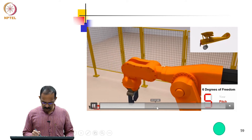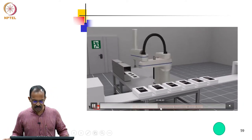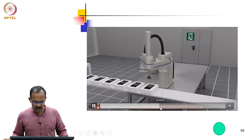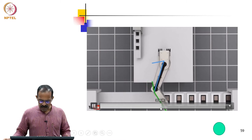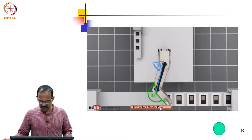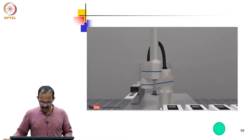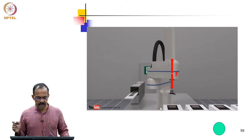The second one is the SCARA configuration, where you can see there are two R joints and one P joint. The last joint is a prismatic joint and the two rotary joints have all their joint axes in the vertical direction. This can be used for positioning and assembly applications, and it provides compliance in the horizontal plane because all the joints are in the vertical axis.